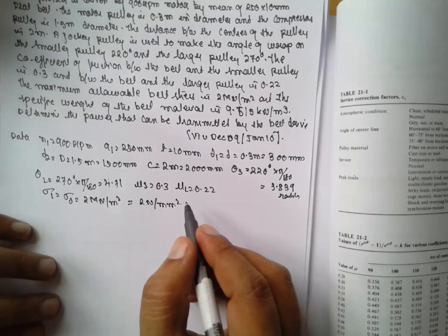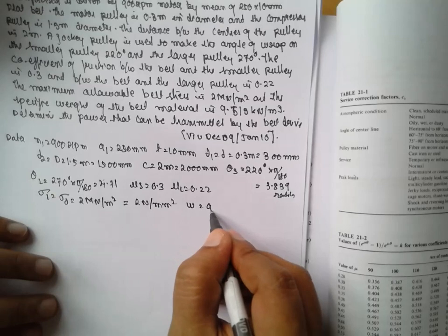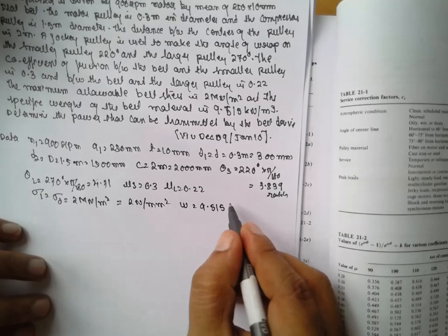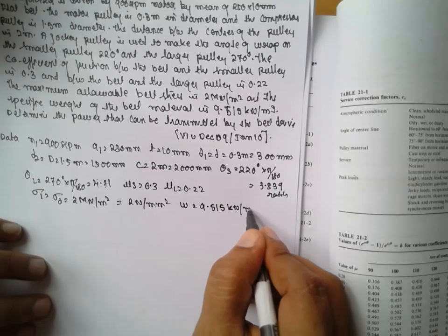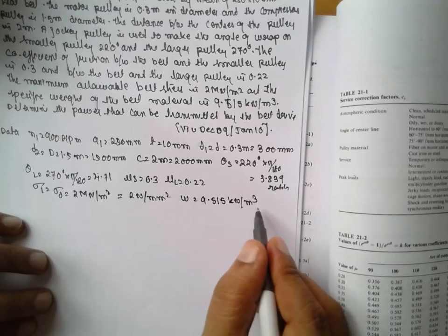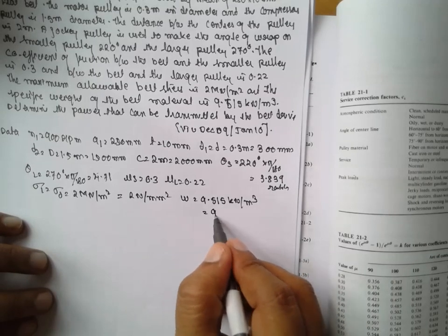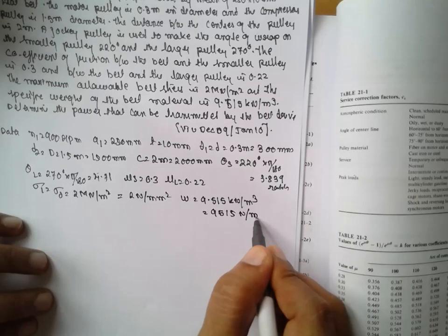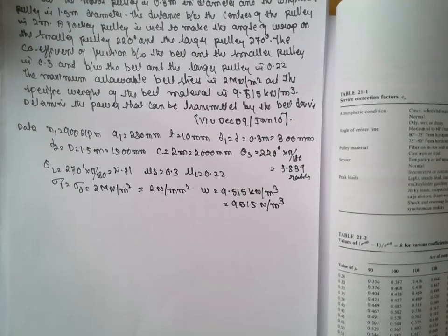Next, they are given the weight W as 9515 kilonewton per meter cube. You have to convert it into newton per mm cube by dividing by 1000. You will get this one.